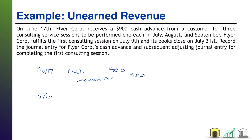At July 31st when we close our books, we look at our trial balance. We'll see unearned revenue with a balance of $900, indicating we owe $900 worth of services. We contact our consultants — who may be working remotely in the field — and ask whether any of those jobs have been completed and need to be adjusted in the unearned revenue account. The consultant who performed the service on July 9th reports in and confirms the job was done, so we reduce our liability accordingly.